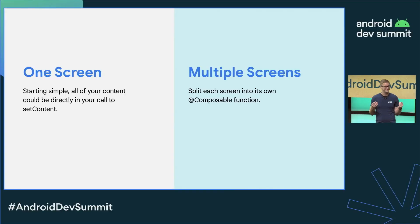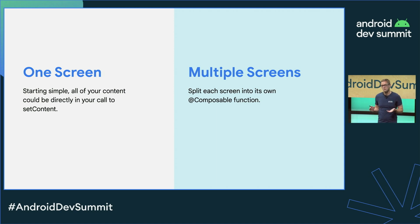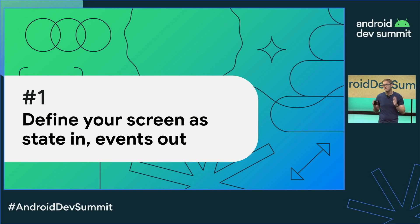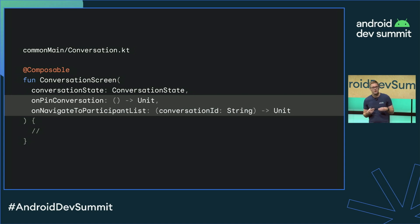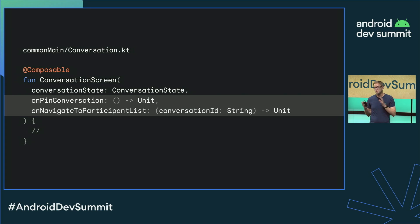The first step is defining your screens. If you think about the simplest single-screen app, you could put all of your content directly in set content, but as soon as you get more than one screen, it makes sense to move those out into separate methods. Best practice number one: define your screen in terms of the state it receives as input and the events that it outputs. Your screen shouldn't care if your data comes from a view model or it's just static state created for an individual test. It also shouldn't care about who's receiving the events it's sending out. This is generally a good idea for any composable, but it's particularly important to make sure each screen is testable in isolation and works great with previews.